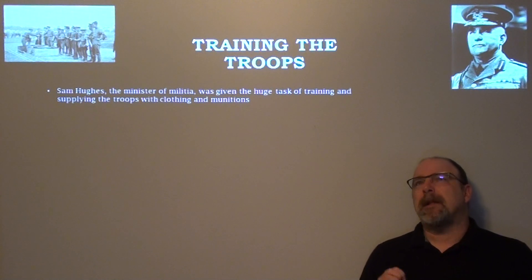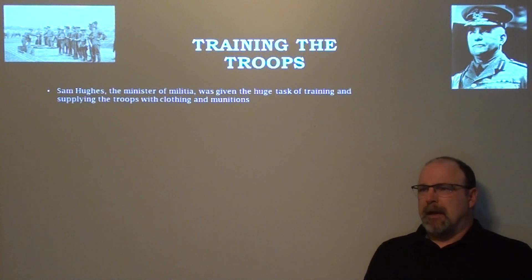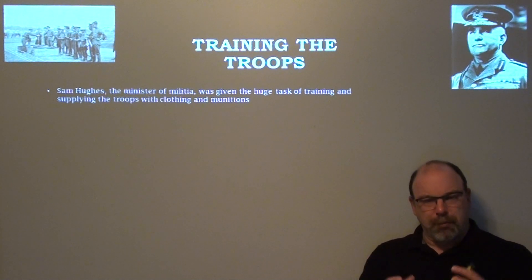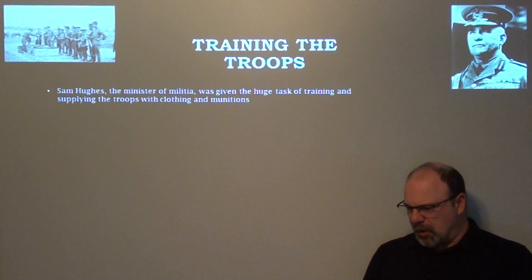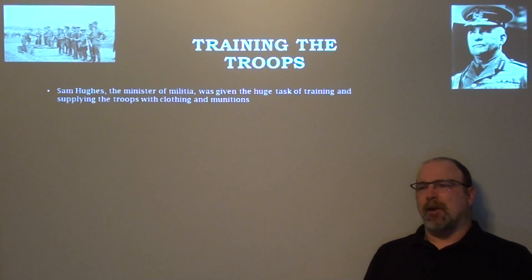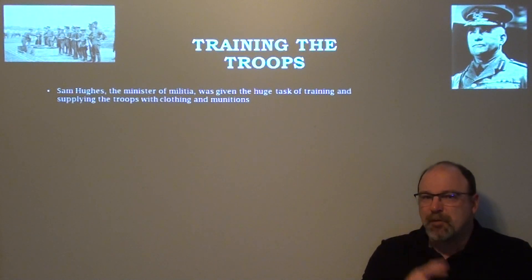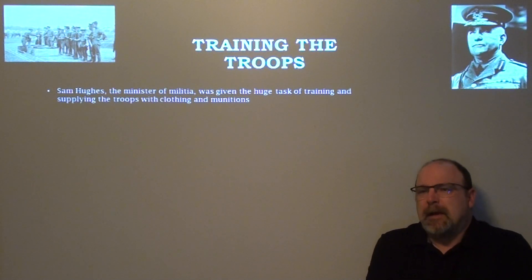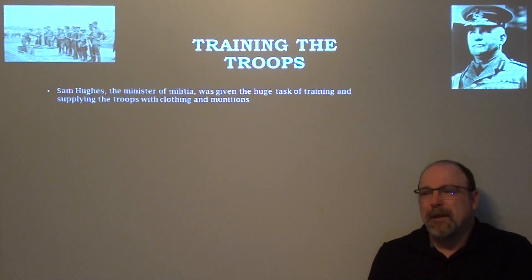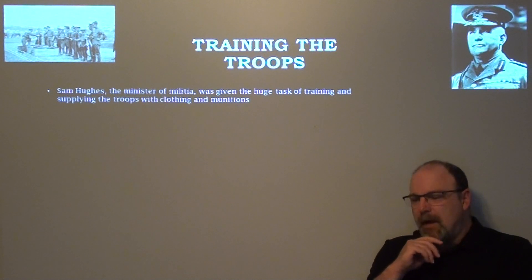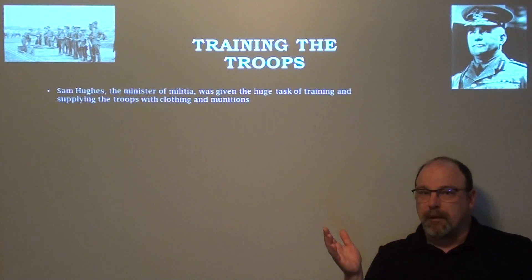Because Canada did not have a standing army, building one in a country this large was an incredibly complex logistical feat. Prime Minister Robert Borden's Minister of Militia was Sam Hughes, who had a long history in Canada's militia. He went to the Boer War, and his grandparents had reportedly fought at the Battle of Waterloo — one under Wellington and the other under Napoleon. He came from a very strong lineage of militia and military tradition.